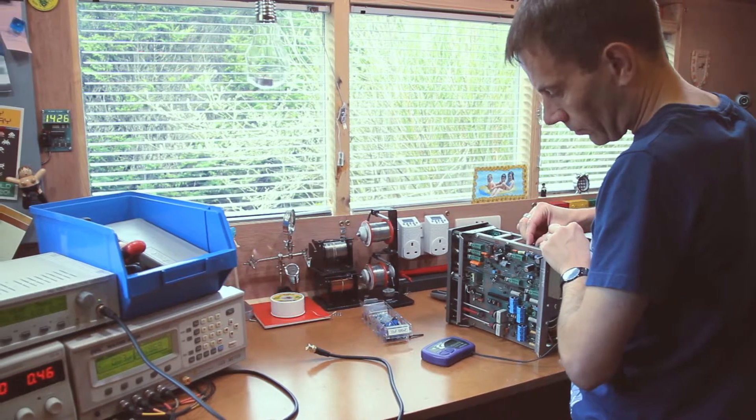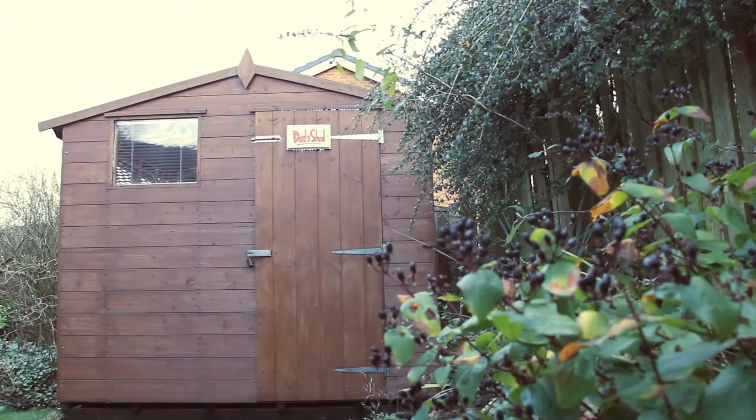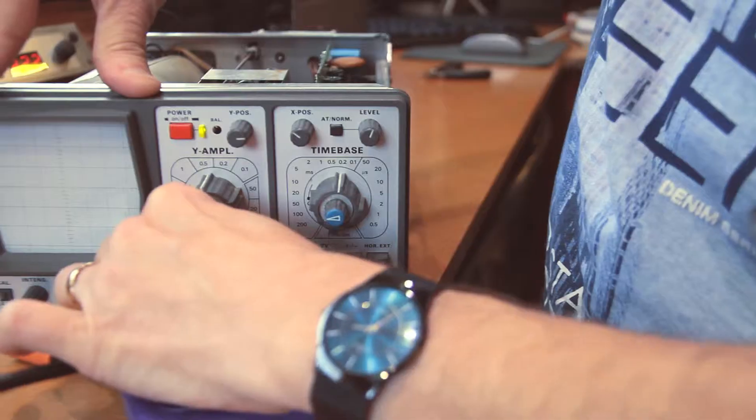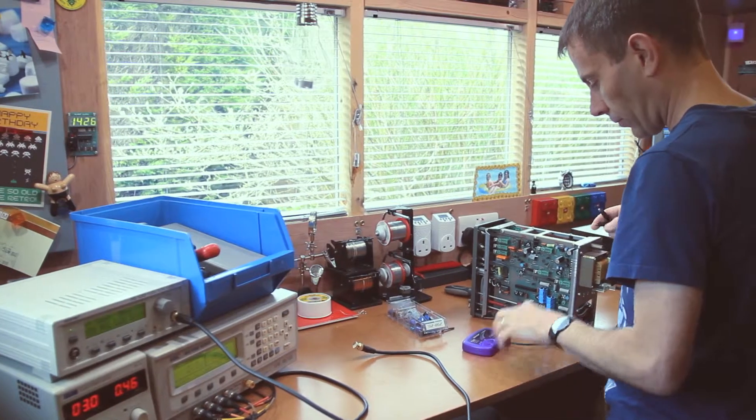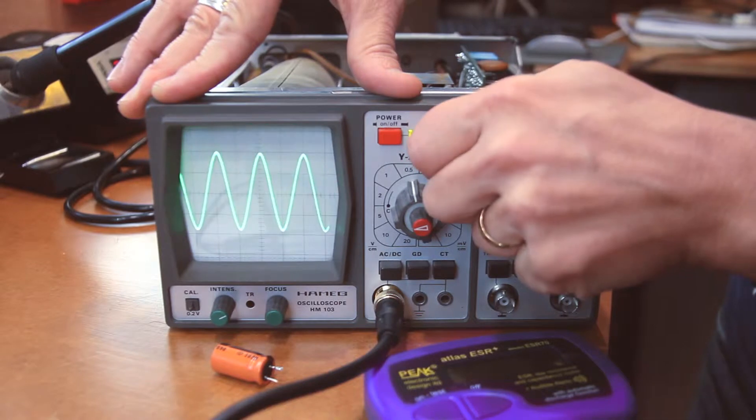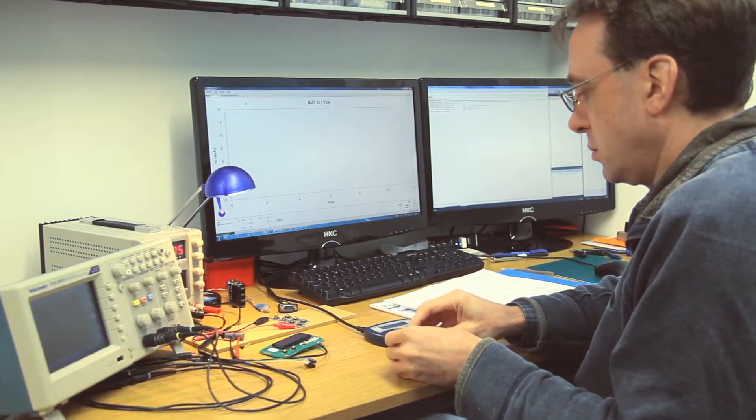A typical hobbyist seen here in his natural habitat, restoring an old oscilloscope. But what seems to be the problem? The Atlas ESR will help him find any electrolytic capacitors that have failed over time.